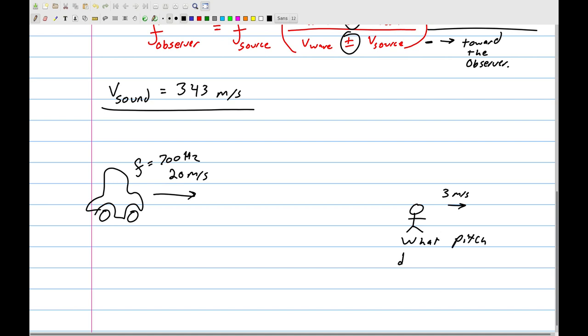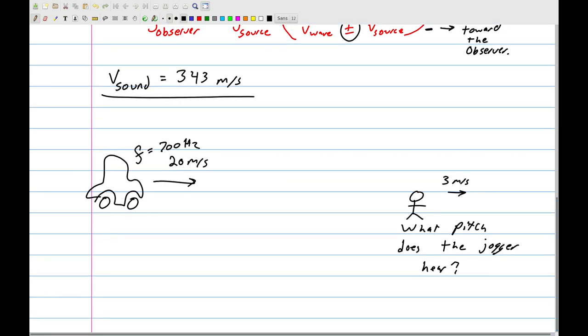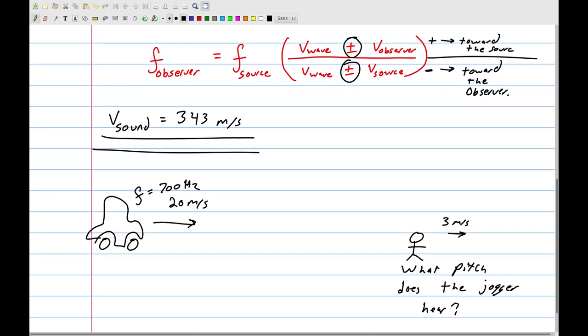Okay, and we want to know what pitch does this guy hear? What pitch does the jogger hear? Well, there's a couple things that are going on here. We see we have the velocity of the source. We have the velocity of the observer. We know that this is sound, so we can use the speed of sound in order to solve that. And really all we need to do is use this equation right up top there in order to solve this.